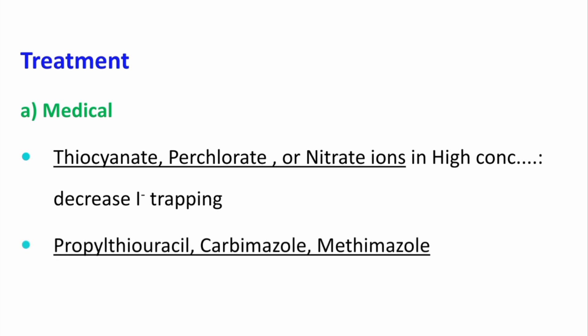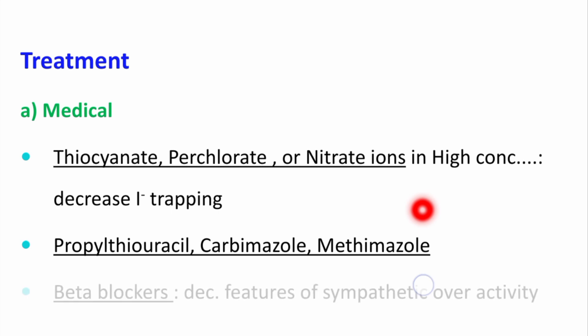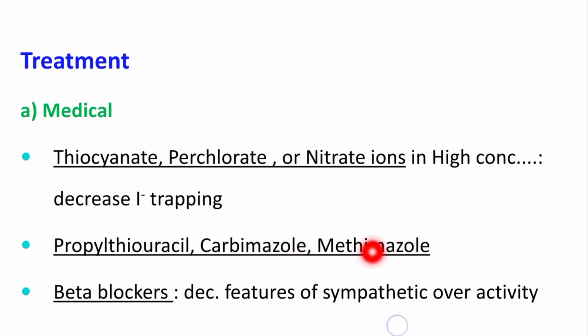Drugs like propylthiouracil and methimazole also decrease the synthesis of thyroid hormones. Lastly, beta blockers can be given to such patients to decrease the features of sympathetic overactivity.